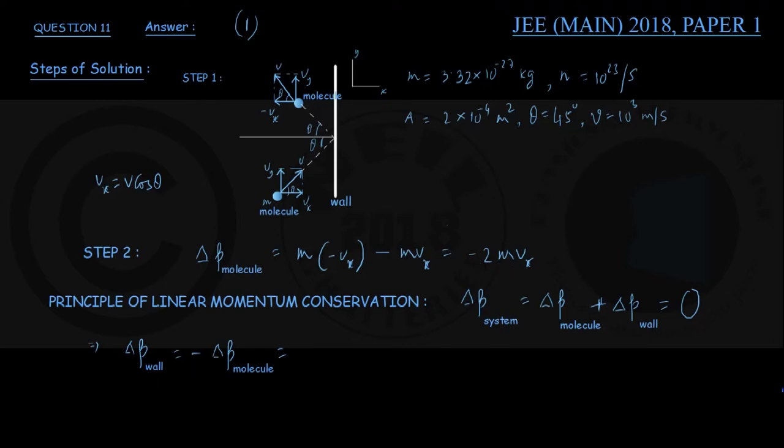See here, we already found ΔP molecule is -2mVx. So a minus of that gives you +2mVx. Once again quickly: a minus sign here and ΔP molecule itself is negative, so it's coming out to be positive 2mVx, and that we can write as 2m × V × cos θ.